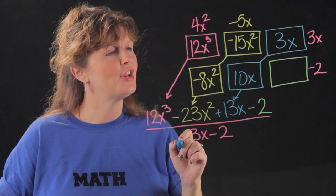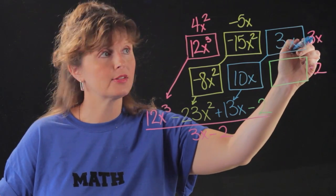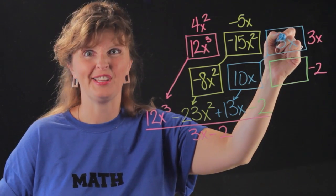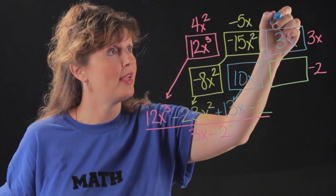Then I need to know, 3x times what gives me 3x? No this 3x times what gives me this 3x. They're the same. So I need a 1 there.